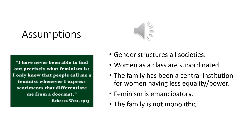Another assumption is that feminism is emancipatory, meaning it emphasizes social change. The other theories we've studied simply tried to describe families, but feminism is different in that it says equality is the ideal and we should pursue social change. The last assumption is that the family is not monolithic — there are varying forms of families, not all of them the standard North American family we've talked about.